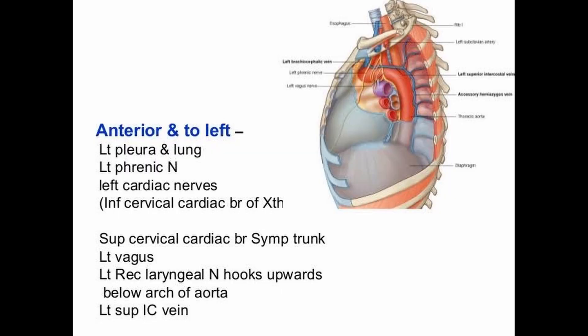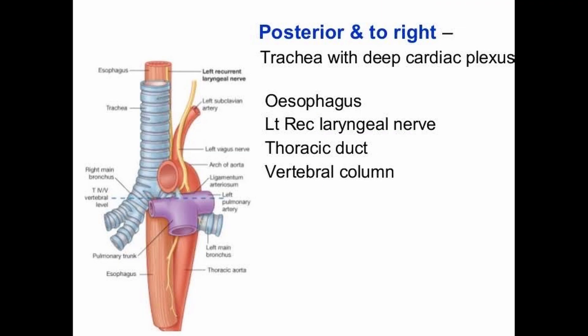Now we discuss the relations of the arch of aorta. Firstly, the anterior and to the left relations: the left pleura and lung, left phrenic nerve, left cardiac nerve, superior cervical cardiac sympathetic trunk, left vagus nerve, and left superior intercostal vein.